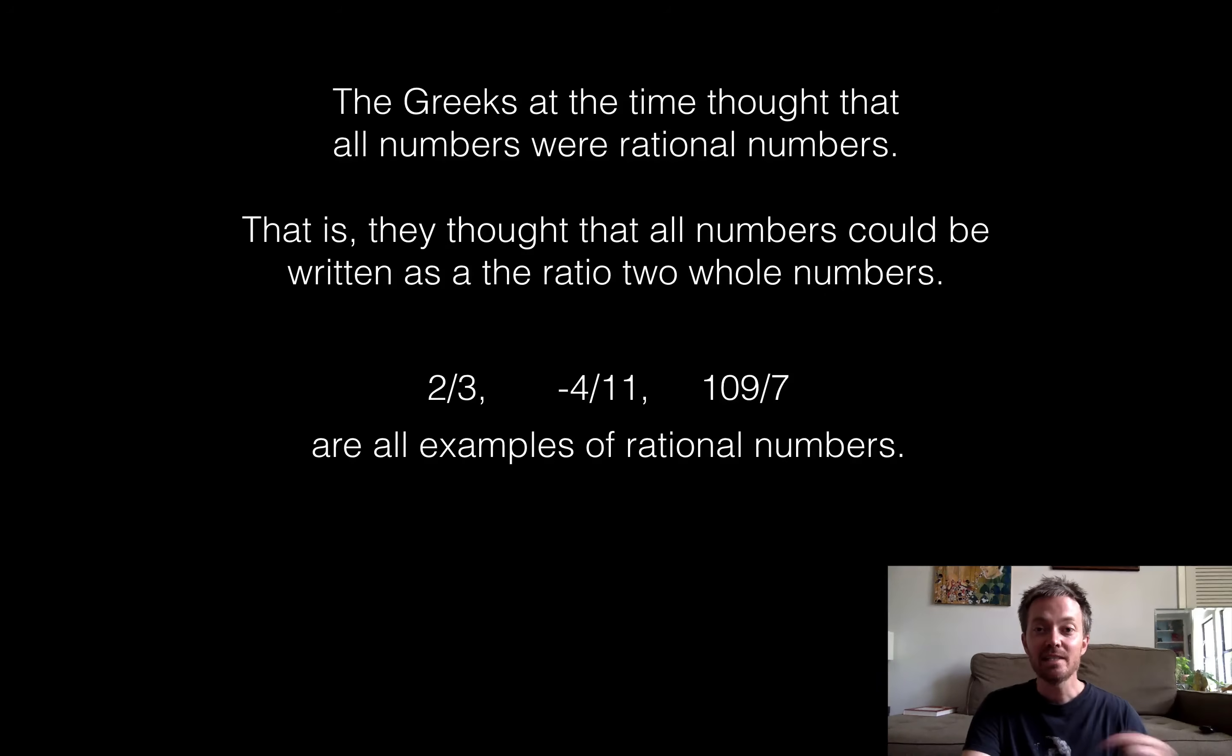So the Greeks at the time thought that all numbers were rational numbers. And again, a rational number is just a fraction, a ratio of two whole numbers. So two thirds, negative four over 11, 109 divided by seven. Those are all examples of rational numbers. We now know numbers, for example, like pi, are not rational. You can't, it's just impossible to write that as a ratio of two whole numbers. At the time they thought that it was possible. They thought that they just hadn't discovered what two numbers make it work out.